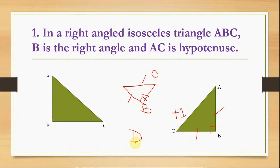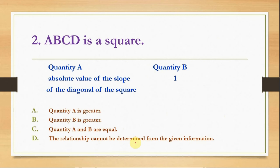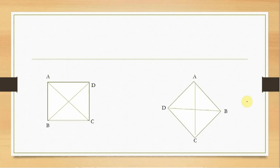Question number two is about a square. ABCD is a square. We have to compare the absolute value of the slope of the diagonal with one. So if we think of a square this way only, the slope of this diagonal is negative one whereas the slope of this diagonal is positive one, and the absolute value is positive one.